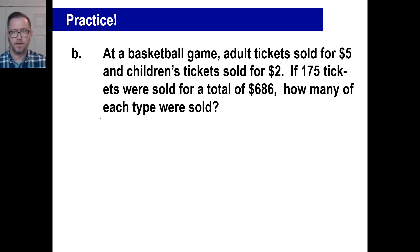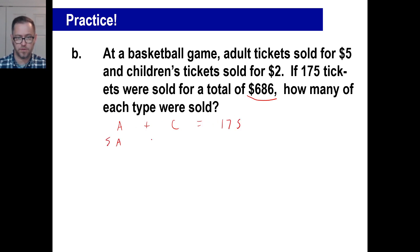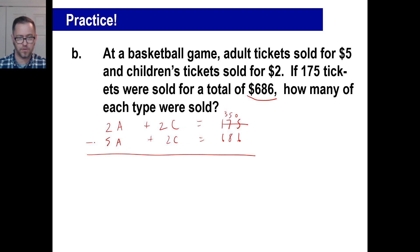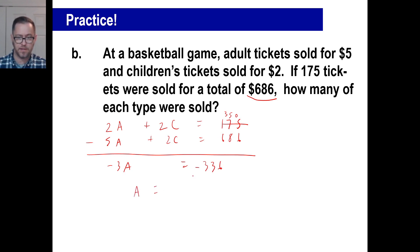Let's look at a basketball game problem. Adult tickets are $5 and children's are $2. 175 tickets were sold, so A plus C equals 175. They made $686 total, so 5A plus 2C equals 686. Using elimination, multiply the first equation by 2 to get 2A plus 2C equals 350. Subtracting gives negative 3A equals negative 336, so A equals 112 adult tickets. Children must be 175 minus 112, which is 63.